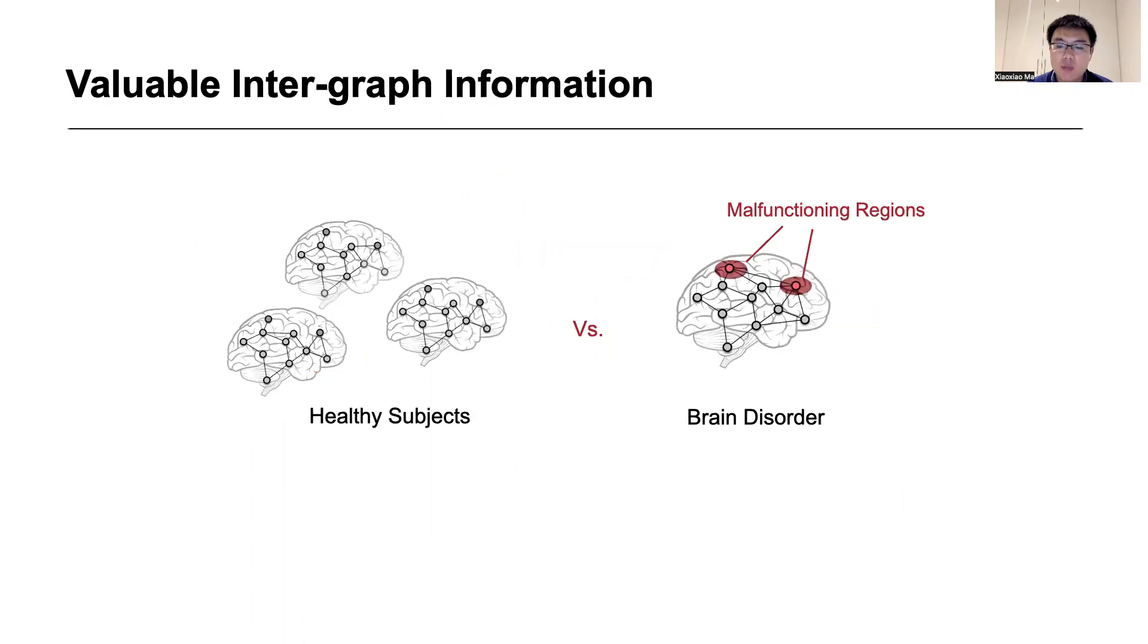We show that cross-graph information is valuable. Taking brain disorders as an example, they usually show abnormal patterns in specific brain regions compared to other healthy subjects. If we can directly encode such differences between normal graphs and anomalies into the graph representation, better detection performance will be achieved.